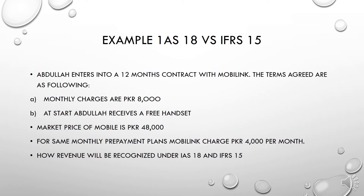We are going to take the telecom sector as an example. Misha Abdullah enters into a 12-month contract with Mobiling and agrees that he will be paying monthly charges of PKR 8,000 for 12 months. At the start of the contract, Mobiling will provide a handset free of cost to Abdullah. The market price at which Mobiling sells the individual handset to a customer is PKR 48,000. The package being charged to Abdullah is PKR 4,000 per month. Let's see how revenue will be recognized under both IAS 18 and IFRS 15.